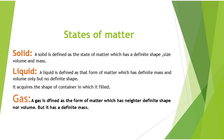Then we come to the gaseous state. A gas has neither definite shape nor definite volume — it does not have a definite shape or volume — but it does have a definite mass. So these are the three states of matter.